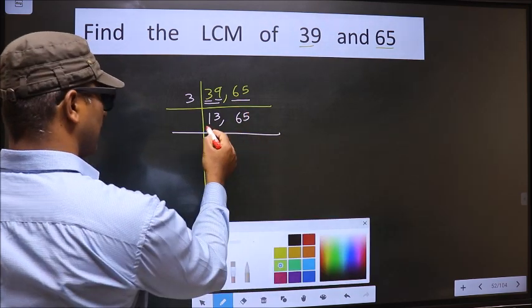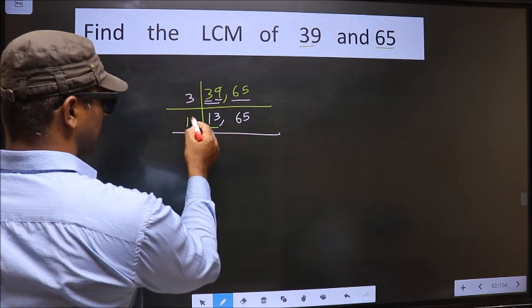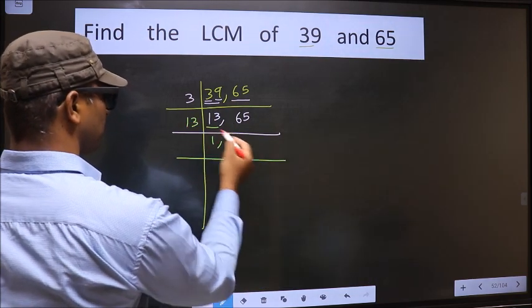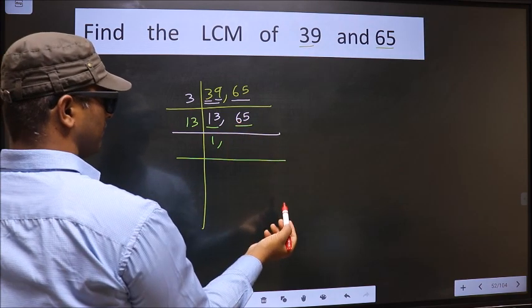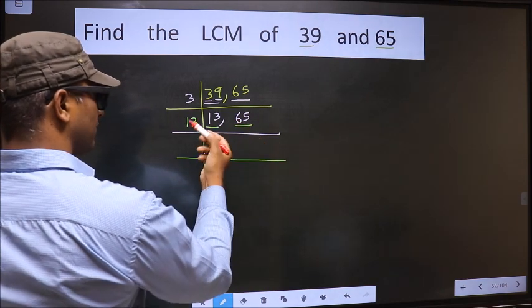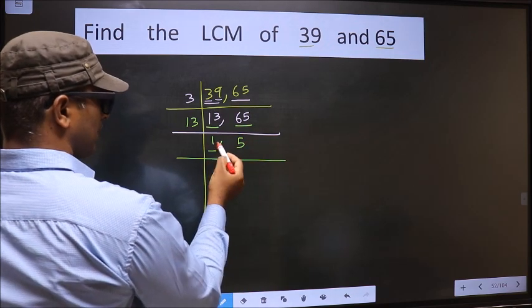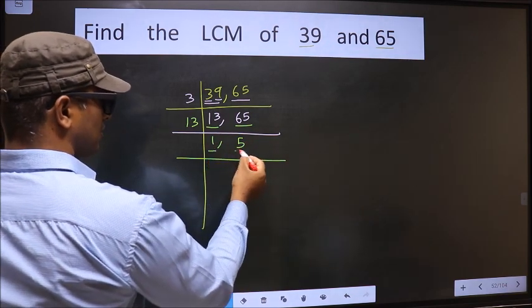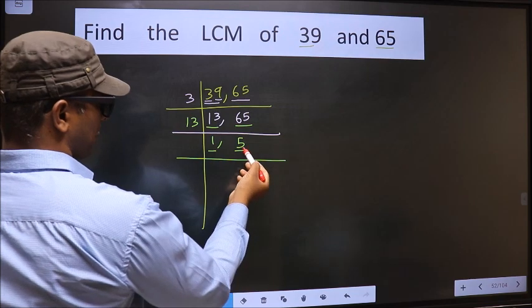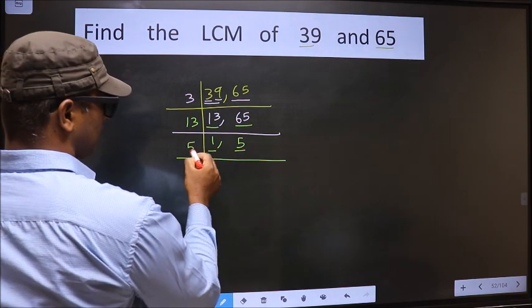Now here we have 13. 13 is a prime number. So 13 ones is 13. The other number 65. When do we get 65 in 13 table? 13 fives is 65. We got 1 here. So focus on the other number that is 5. 5 is a prime number. So 5 ones is 5.